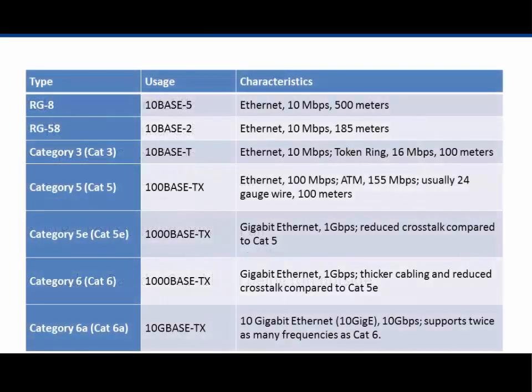Here is a listing of the various types of Ethernet copper cable. You can see the 10Base5 and 10Base2 cables — that's the thick net and the thin net — using RG8 and RG58. The 10 means 10 megabits per second, the base means baseband technology, and the number indicates the distance: 5 for 500 meters, 2 for 185 meters, which they essentially rounded to 200 meters.